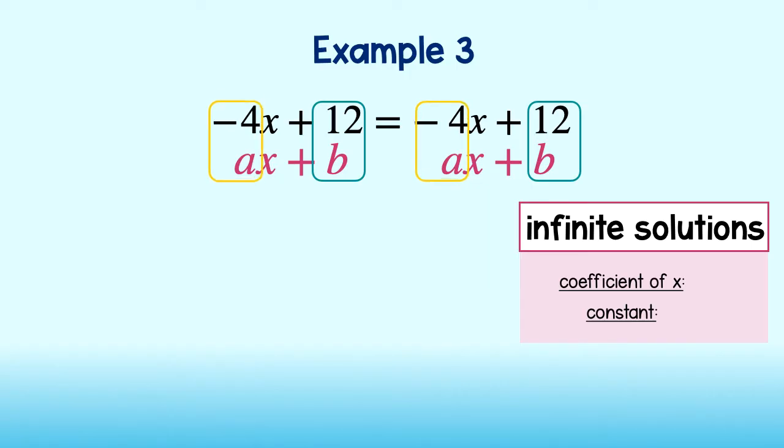We see that the coefficients are both negative 4. We can note that they are the same. And the constants are both 12. We can note that they are also the same. Whenever you encounter an equation where the coefficients and constants are the same on both sides, you can conclude that the equation has infinite many solutions.